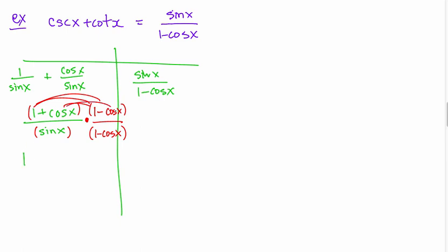And then the numerators are going to distribute and come up with 1, and then minus cos x plus cos x cancels out, minus cos squared x. And on the denominator, sin x times 1 minus cos x. And by the way, I don't really want to foil this or distribute the sin x in because it's going to get messy and I'm just going to have to factor it back out. The top becomes sin squared x,